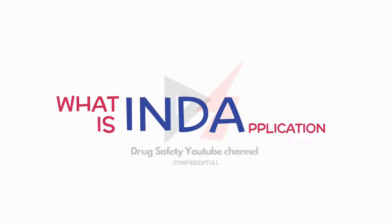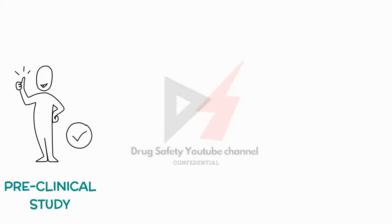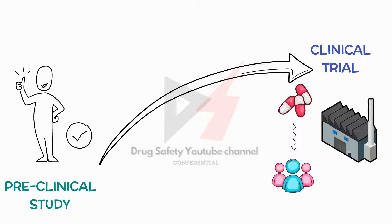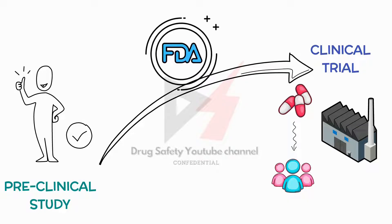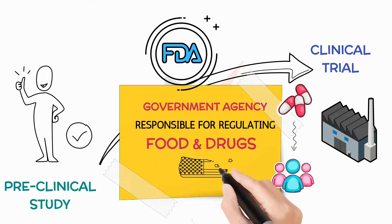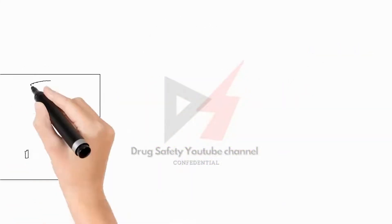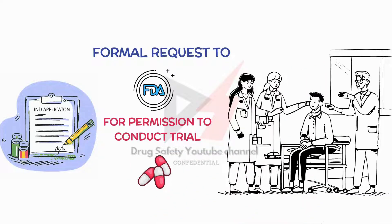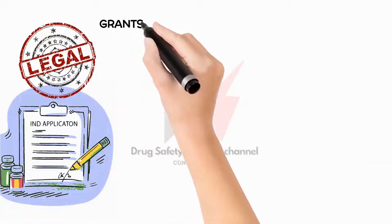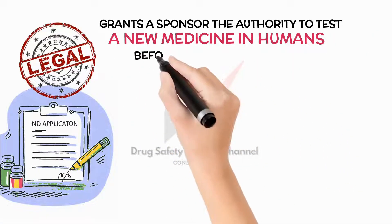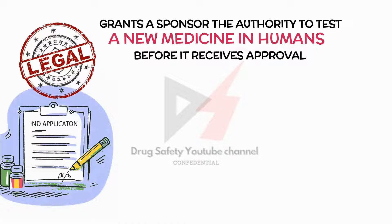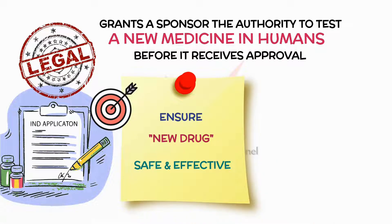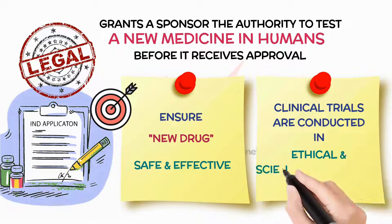After successfully completing the preclinical study phase and entering Phase 1 of a clinical trial, the sponsor is required to test the new medicine on humans. To proceed with this crucial step, the sponsor must seek approval from the FDA, the government agency responsible for regulating food and drugs in the United States. The Investigational New Drug application serves as the formal request to the FDA for permission to conduct trials of the new medicine in humans — a legal document that grants the sponsor authority to test it before it receives approval for sale. The primary goal of an IND application is to ensure the drug is reasonably safe and effective for its intended use and that clinical trials are conducted in an ethical and scientifically sound manner.